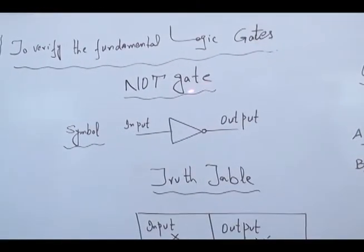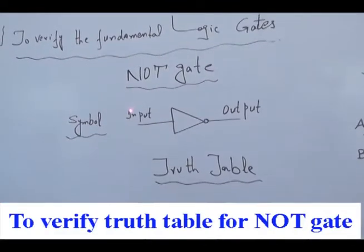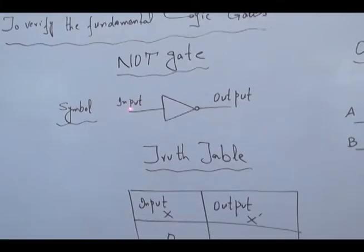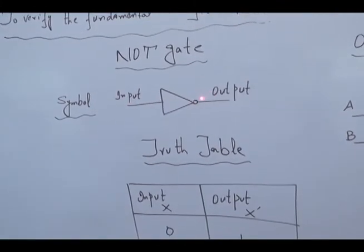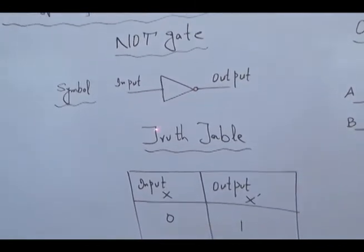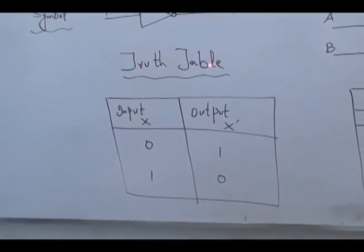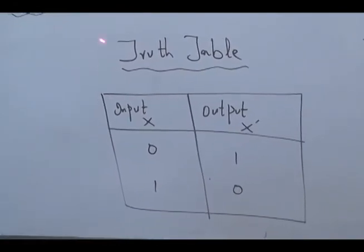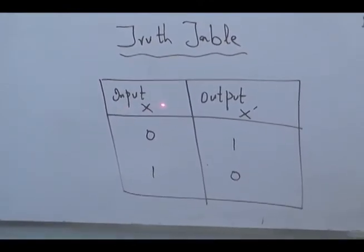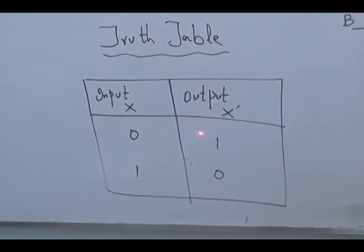Now we start with the NOT gate. As you know, the NOT gate is just an inverter — it will invert the given input. The symbol of this gate has an input and an output. The bubble shown on the symbol represents the NOT gate. To verify the fundamental logic gates, we have to draw the truth table.